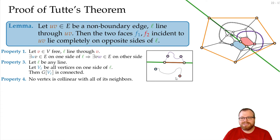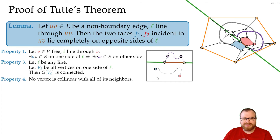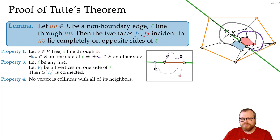So the two vertices cannot lie on the same side of L. We also have to show they cannot lie on the line itself, but that follows simply: by Properties 4 and 1, a vertex on the line must have a neighbor below, giving again a gray path entirely below the line, and the same contradiction follows.